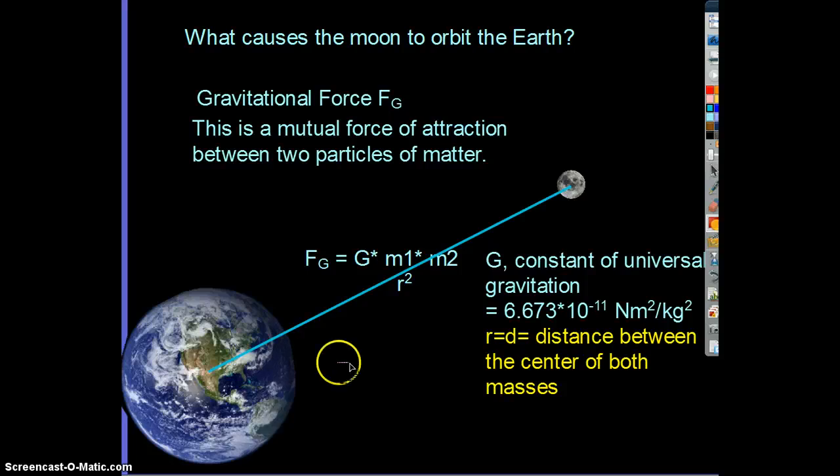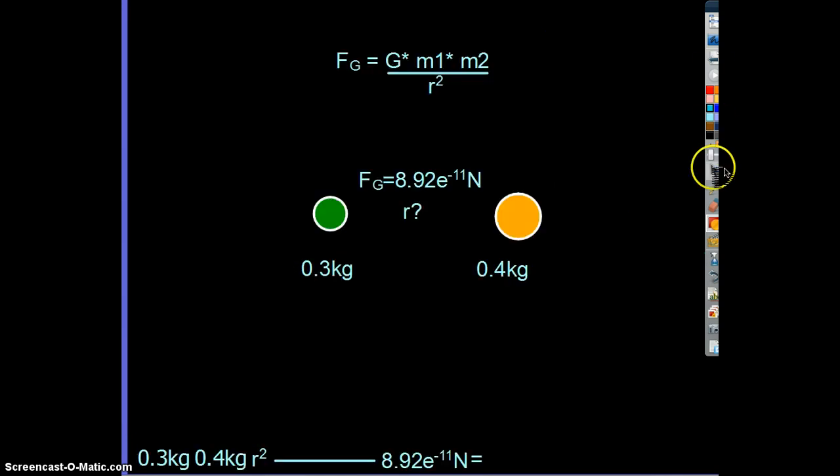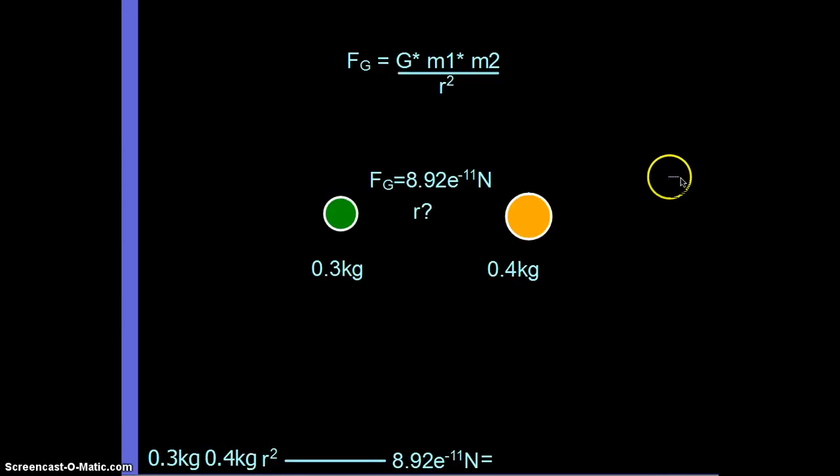So let's look at a sample problem. Here we have, this is straight out of your book. You have a green ball and a yellow ball. They are separated by an unknown distance with a force of 8.92 times 10 to the negative 11th newtons. 3 kilograms, 4 kilograms, we want to solve for it. So what we need to do is we need to set up our problem.